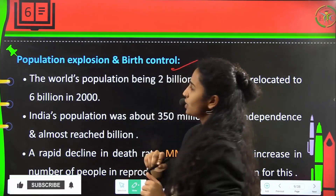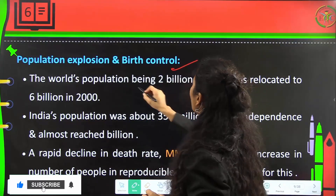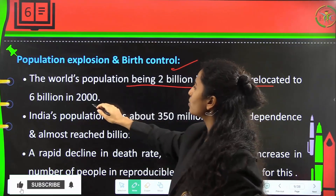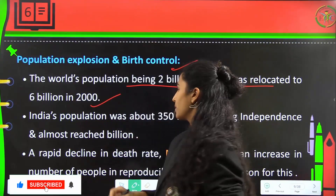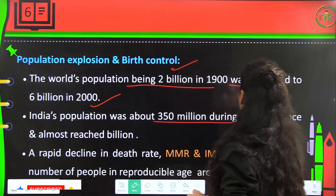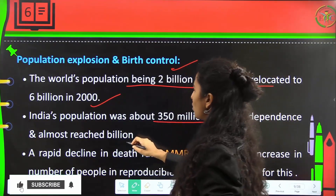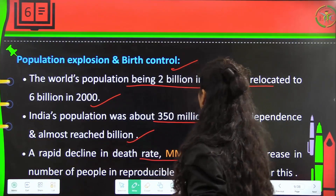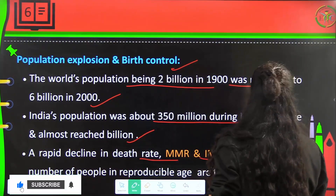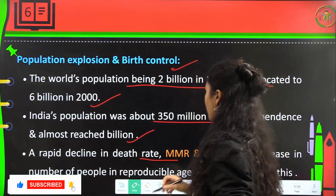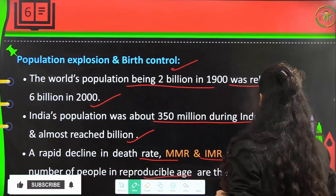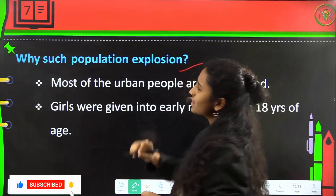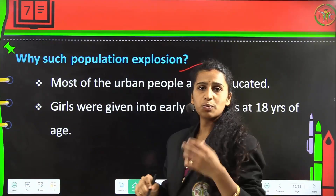Regarding population explosion and birth control: the world's population was 2 billion in 1900 and reached 6 billion by 2000. India's population was about 350 million at independence and has nearly reached a billion since. A rapid decline in death rate, MMR, and IMR, along with an increase in the number of people in reproductive ages, are the main reasons for this population explosion.